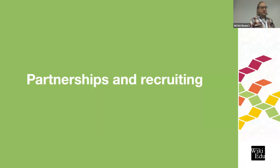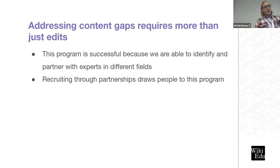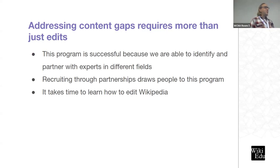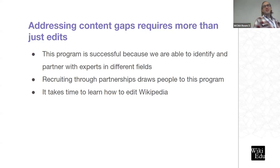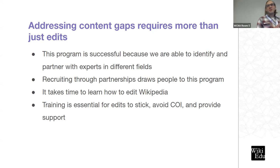Partnerships and recruiting are actually the most resource-intensive element of this program and also have the biggest payoff in terms of addressing content gaps. The reason I attribute a lot of success to this program is because we're able to identify and partner with experts in different fields. It takes time to learn how to edit Wikipedia, so we need institutional support or people self-selecting to participate. At least 90% of participants are new to editing — they need to be activated, pushed, and supported. Training is essential; we have to explain COI and provide support.